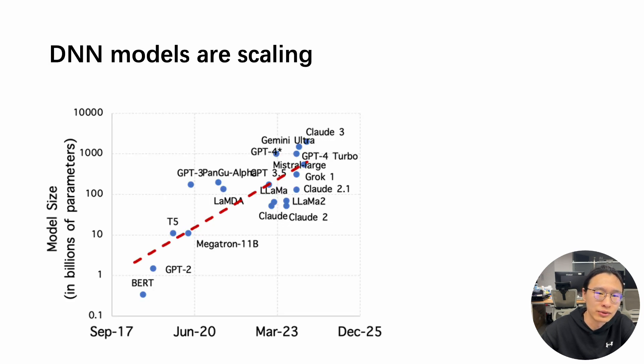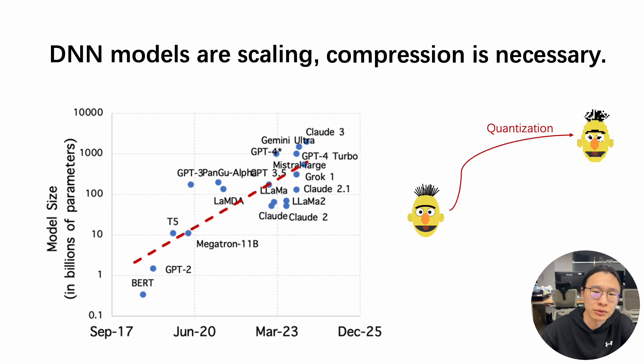As we all know, the DNN models are scaling very fast, so compression is necessary. The common compression methods include quantization, pruning, knowledge distillation, and many others.